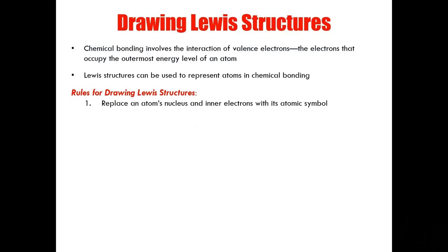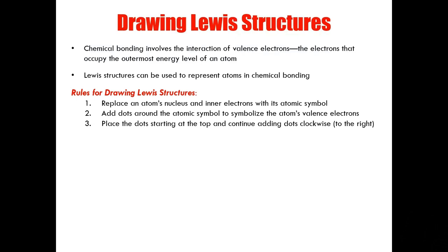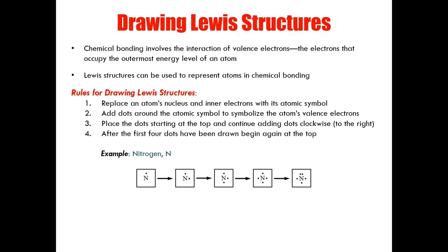The first rule: replace an atom's nucleus and inner electrons with its atomic symbol. The second: add dots around the atomic symbol to symbolize the atom's valence electrons. The third: place the dots starting at the top of the atomic symbol and continue adding dots around the atomic symbol clockwise to the right. And the fourth: after you've added the first four dots around the atomic symbol, begin again at the top by doubling up.